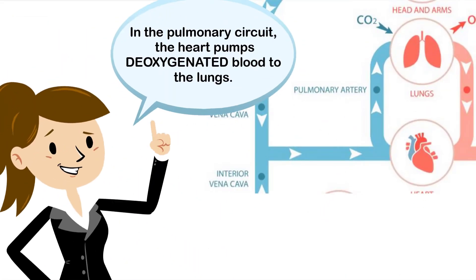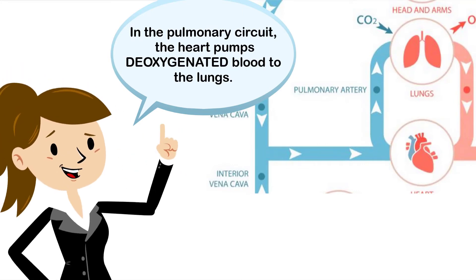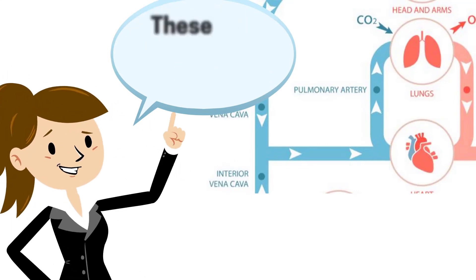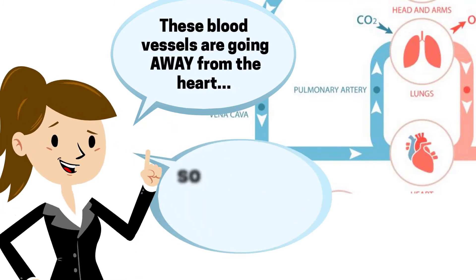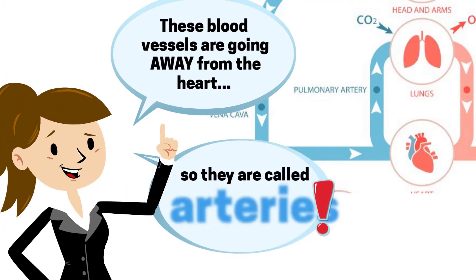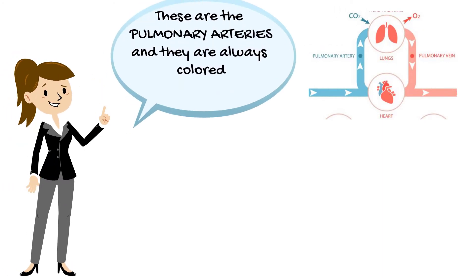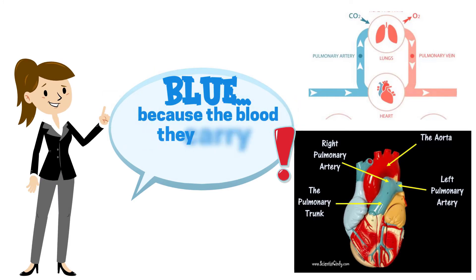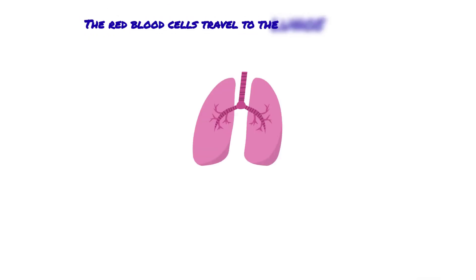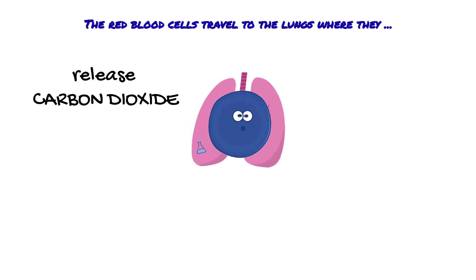In the pulmonary circuit, the heart pumps deoxygenated blood to the lungs. These blood vessels are going away from the heart, so they are called arteries — pulmonary arteries — but they are always colored blue because the blood they carry is deoxygenated. The red blood cells travel to the lungs where they release carbon dioxide and pick up oxygen.